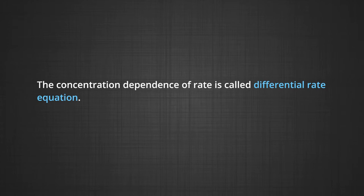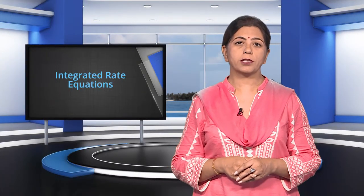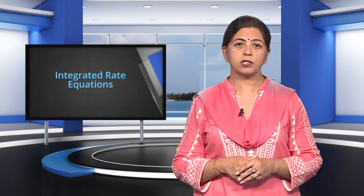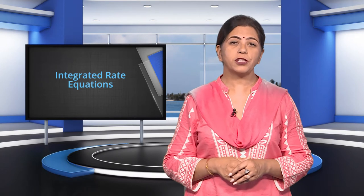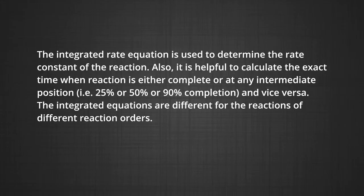First, let us consider integrated rate equations. We have already noted that the concentration dependence of the rate is called the differential rate equation. It is not always convenient to determine the instantaneous rate, as it is measured by the slope of the tangent at point T in the concentration versus time plot, making it difficult to determine the rate law and order of the reaction. We can integrate the differential rate equation to give a relation between concentration at different times and the rate constant. The integrated rate equation is used to determine the rate constant of the reaction.